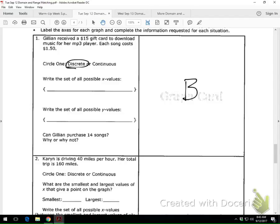Now, it says write the set of all possible X-values. So what's your all possible X-values? Zero through 10. There you go, zero through 10.